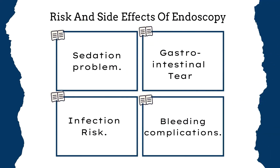Risks and side effects of endoscopy may or may not occur during an examination. These include reaction to sedation prior to upper endoscopy, which can occasionally cause a serious adverse reaction. Sometimes tearing of the gastrointestinal tract may occur. The risk of infection is low for routine examination and biopsy but increases when additional procedures are performed. If a biopsy is done, the risk of bleeding complications may occur, and in rare cases a blood transfusion may be needed.